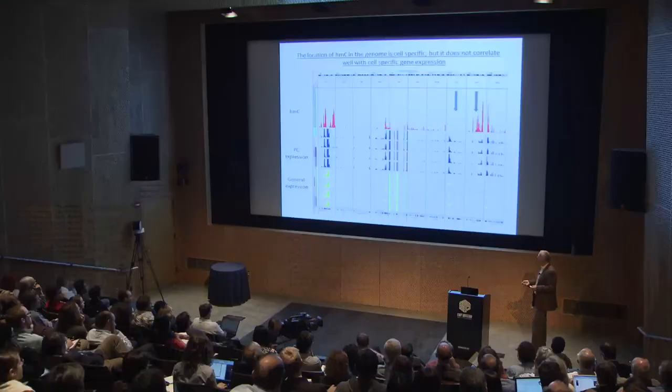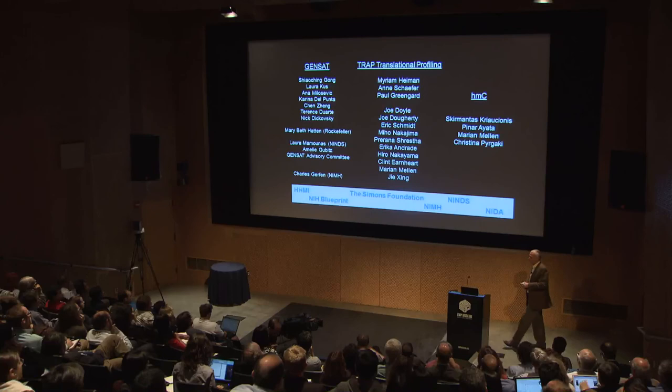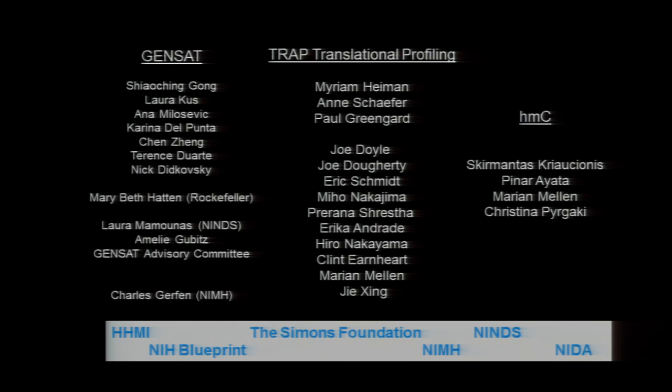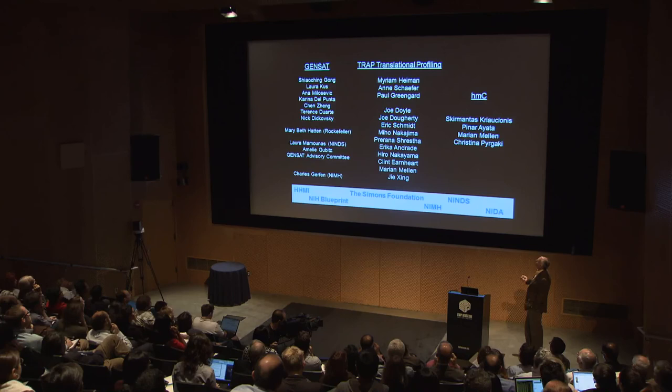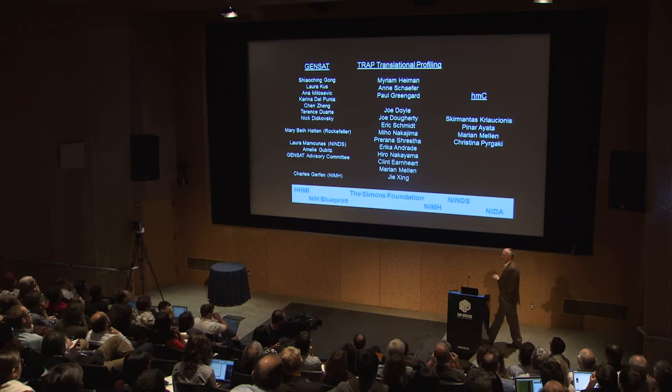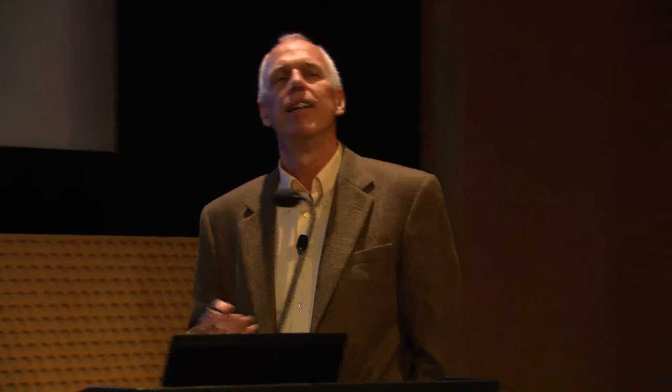What I want to leave you with is just the certainty that if you study cell types at a cell-specific level in these conditions, you're going to find out new things with regard to disease. Hopefully we can generate a pharmacology that will allow us to get out of mice into higher species. I want to mention a few people: Xiaojian Gong has been a leader in GENSAT, which is a large group. Eric Schmidt did all of the depression work, Skirmantis the HMC work, Mary Beth Hatten was my collaborator at the beginning of GENSAT, and Paul Greengard has been my collaborator in all of the TRAP studies in gene expression profiling. Thank you.